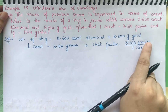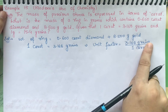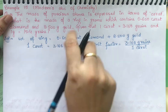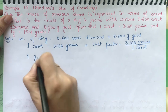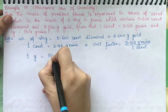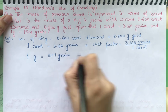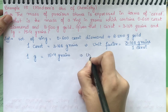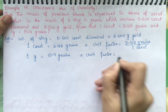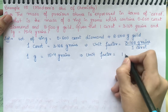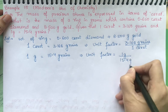The grain is now in the numerator, so when we convert grains to grams we need to cancel it by placing grains in the denominator. We know that 1 gram equals 15.4 grains, so our second unit factor is 1 gram per 15.4 grains.